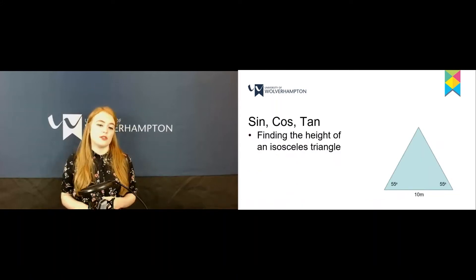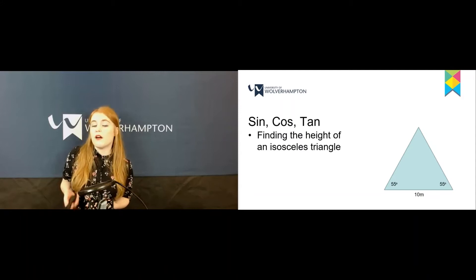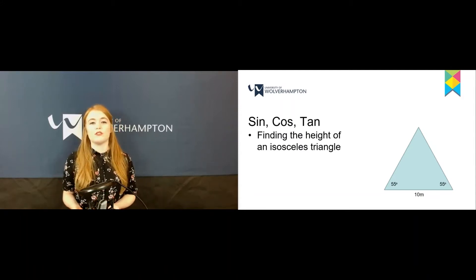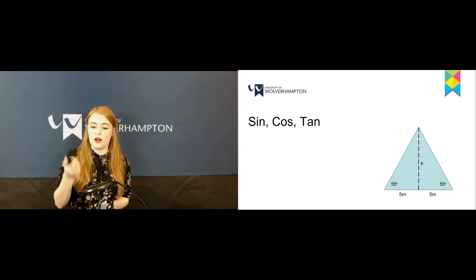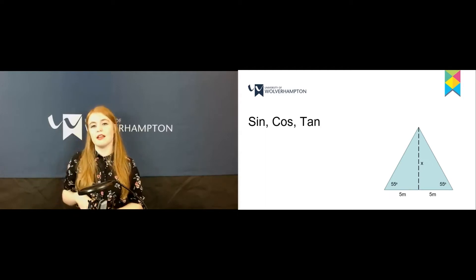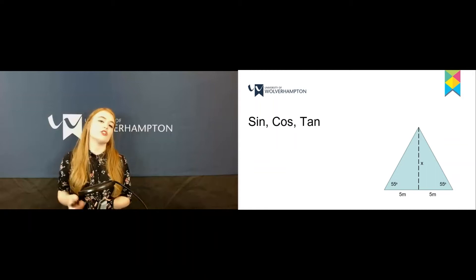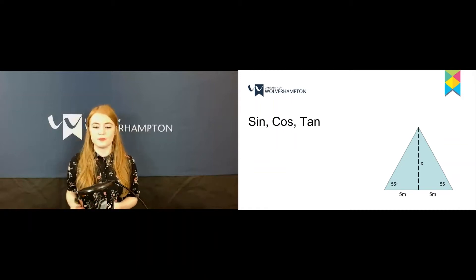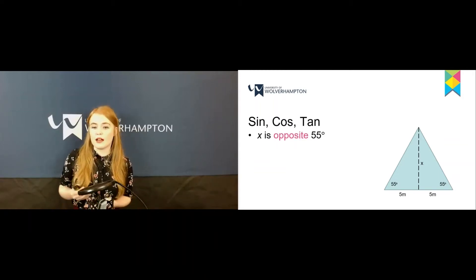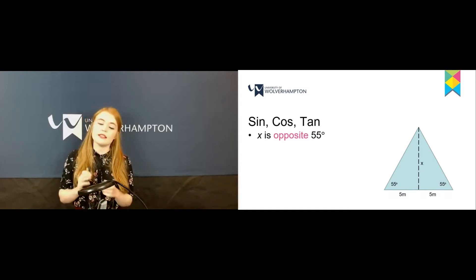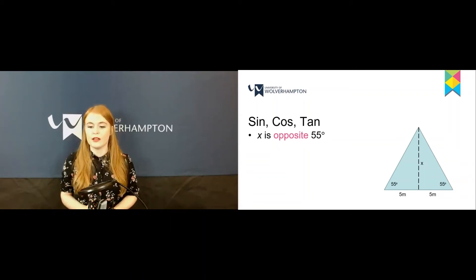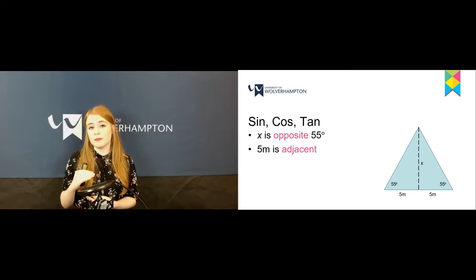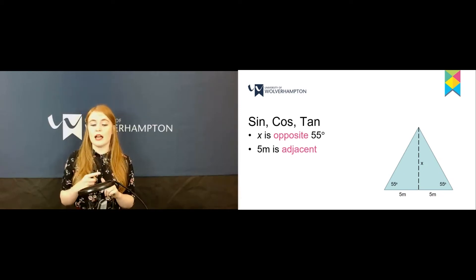Let's put it into use. For example, if we wanted to find the height of the isosceles triangle, we could use SOHCAHTOA. First we need to highlight where the height is. You can see that splits it into two right-angle triangles. We have an angle of 55 degrees, and x the height is opposite the angle, with 5 meters at the bottom which is adjacent.